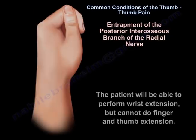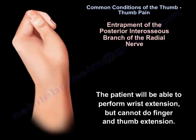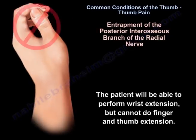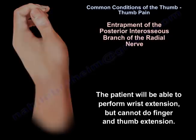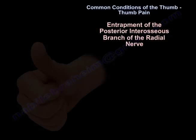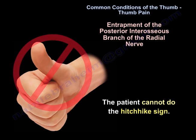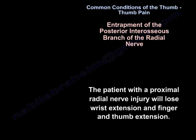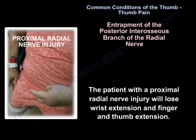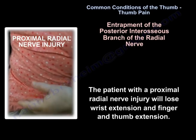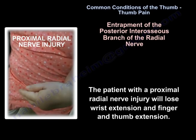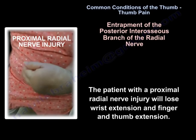With a posterior interosseous nerve injury, the patient will be able to perform wrist extension but cannot do finger and thumb extension — the patient cannot hitchhike. A patient with a proximal radial nerve injury will lose both wrist extension and finger and thumb extension.